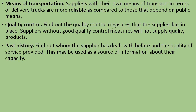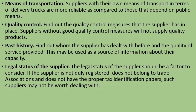Ten: past history — find out who the supplier has dealt with before and the quality of service they have provided. This may be used as a source of information about their capacity. Eleven: the status of your supplier — are these suppliers properly registered? If the supplier is not duly registered, does not belong to any trade association, and does not have the proper tax identification factors, then they will not be worth dealing with.